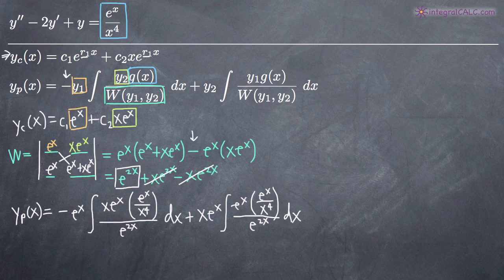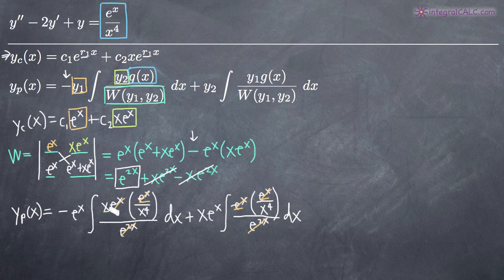This simplifies quickly. In the first integral, e to the x times e to the x in the numerator gives e to the 2x, which cancels with e to the 2x in the denominator. The x in the numerator cancels one power from x to the fourth, leaving x cubed in the denominator. In the second integral, the same e to the 2x cancellation occurs, and we're left with x to the fourth in the denominator. So we get: negative e to the x times the integral of 1 over x cubed dx, plus x e to the x times the integral of 1 over x to the fourth dx.